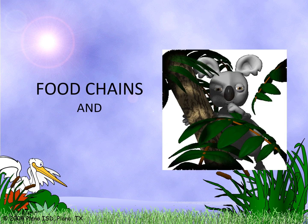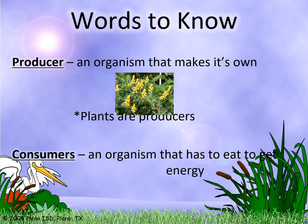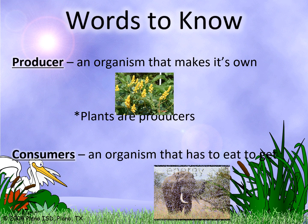Now let's move to food chains and food webs. In a food chain and food web, there is always a producer and a consumer. Producers are organisms that make their own food — the best examples are plants. Consumers are organisms that have to eat to get energy — the best examples are animals and humans.